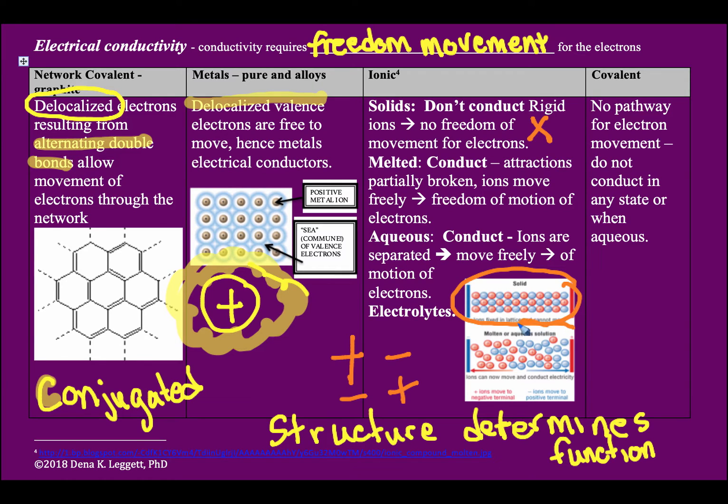Once you melt it, those negative charges and positive charges start to move a little bit. And when they move, that movement of ions, when ions can move freely, we have freedom of motion of electrons. So melted ionic do conduct.